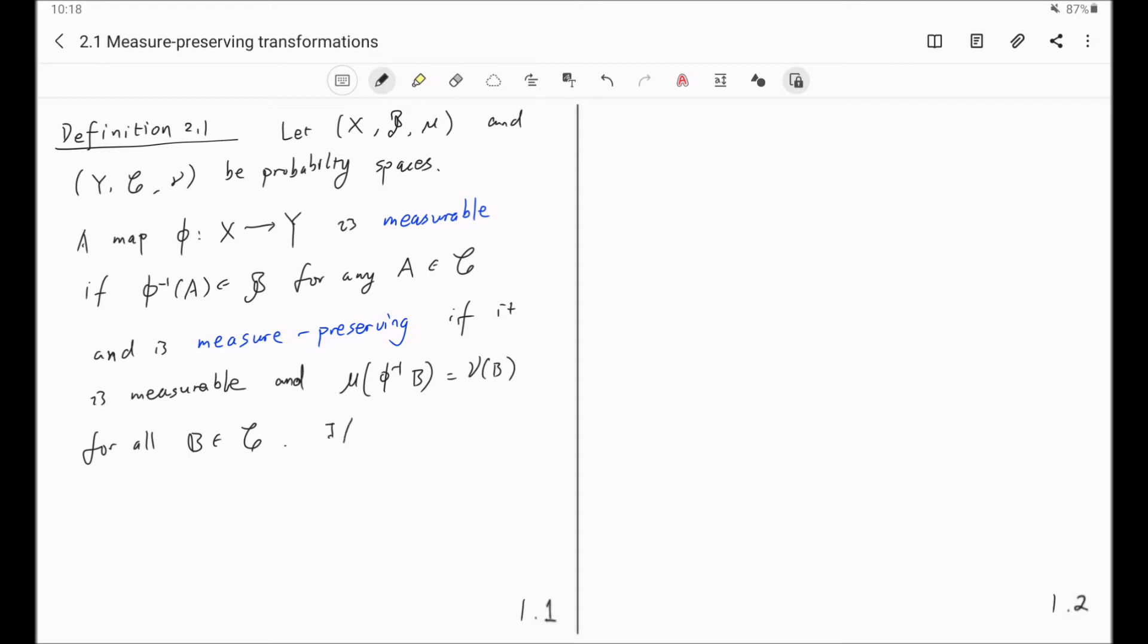And if in addition the inverse map φ⁻¹ exists almost everywhere and is measurable, then φ is called an invertible measure preserving map.